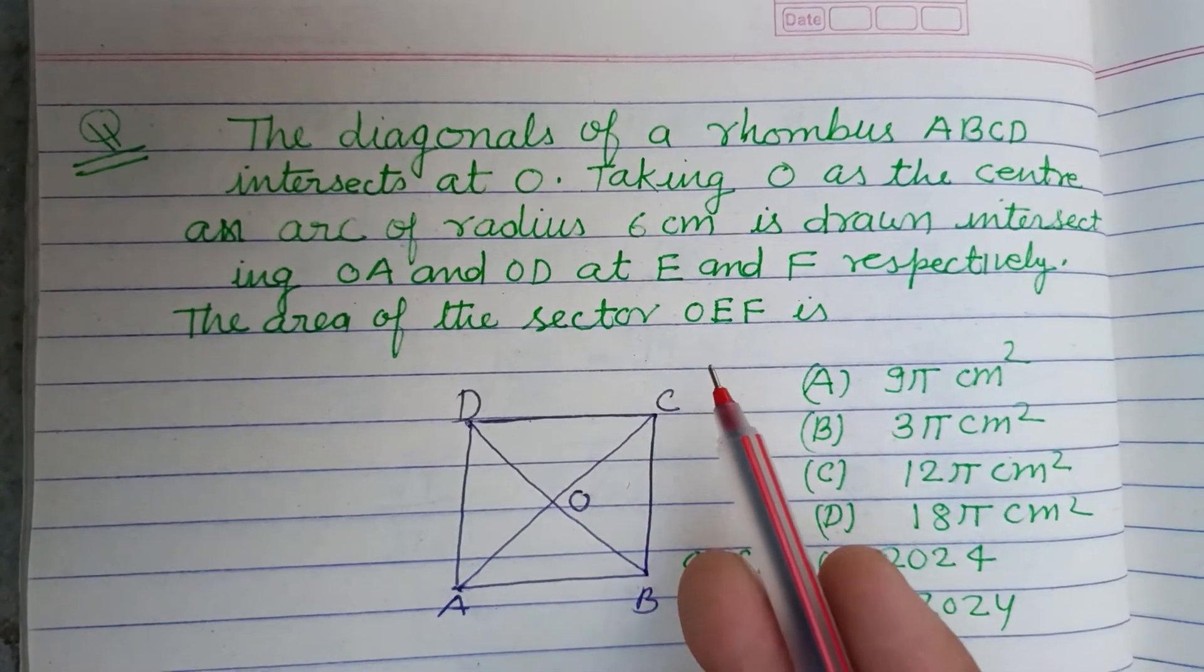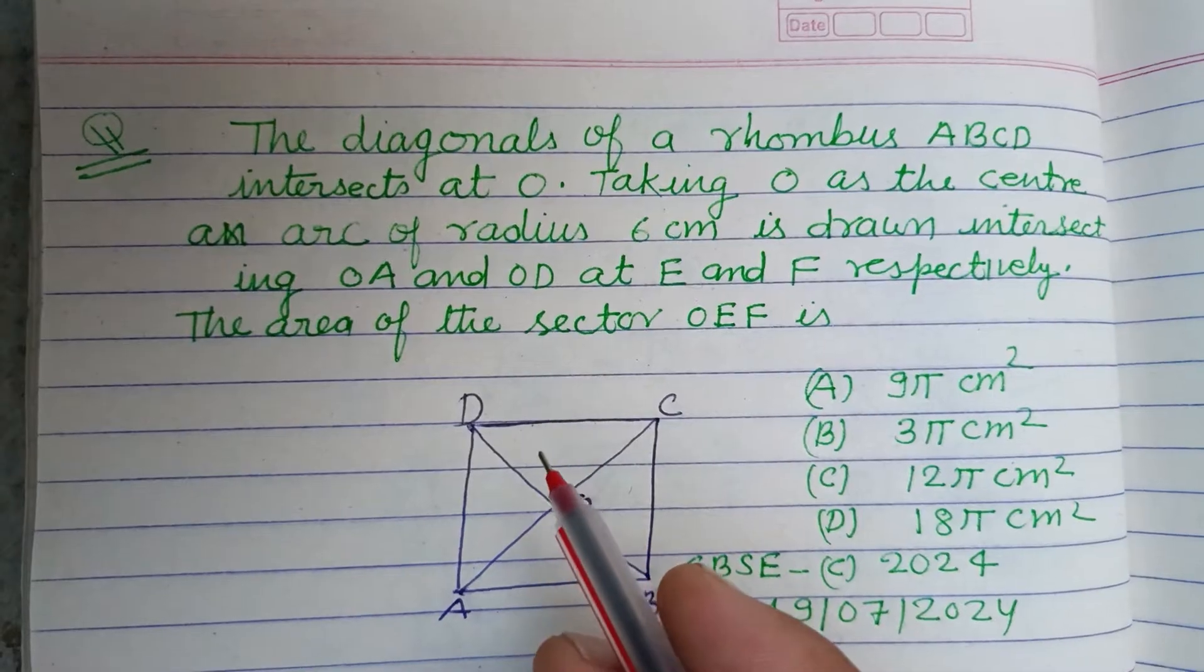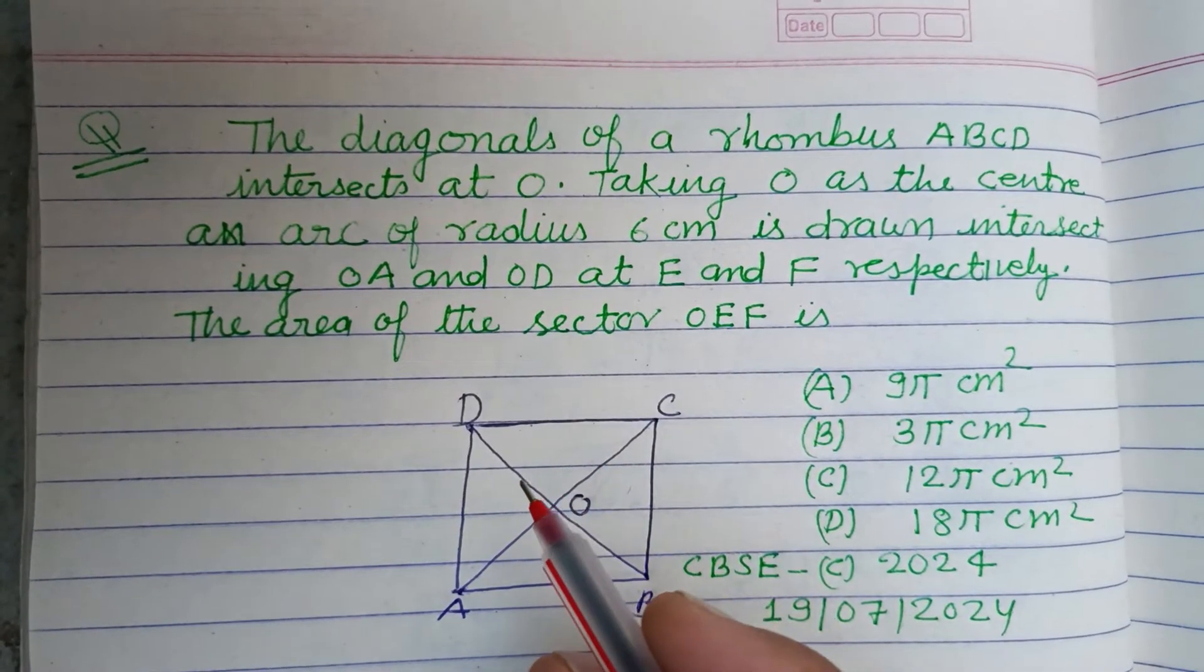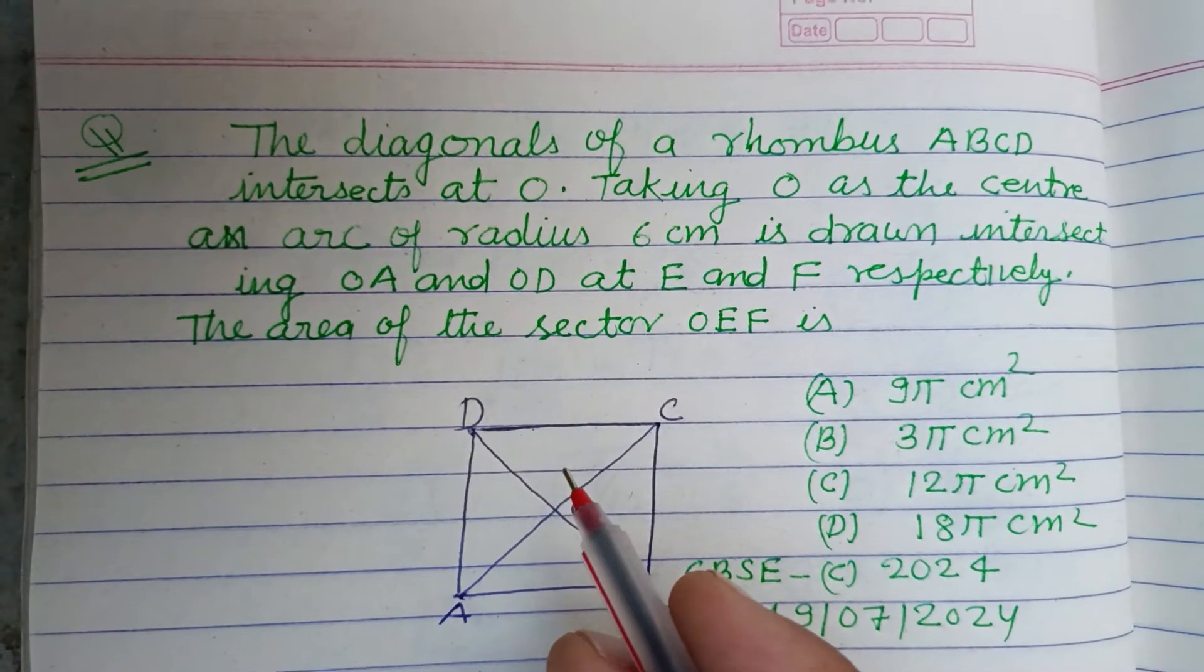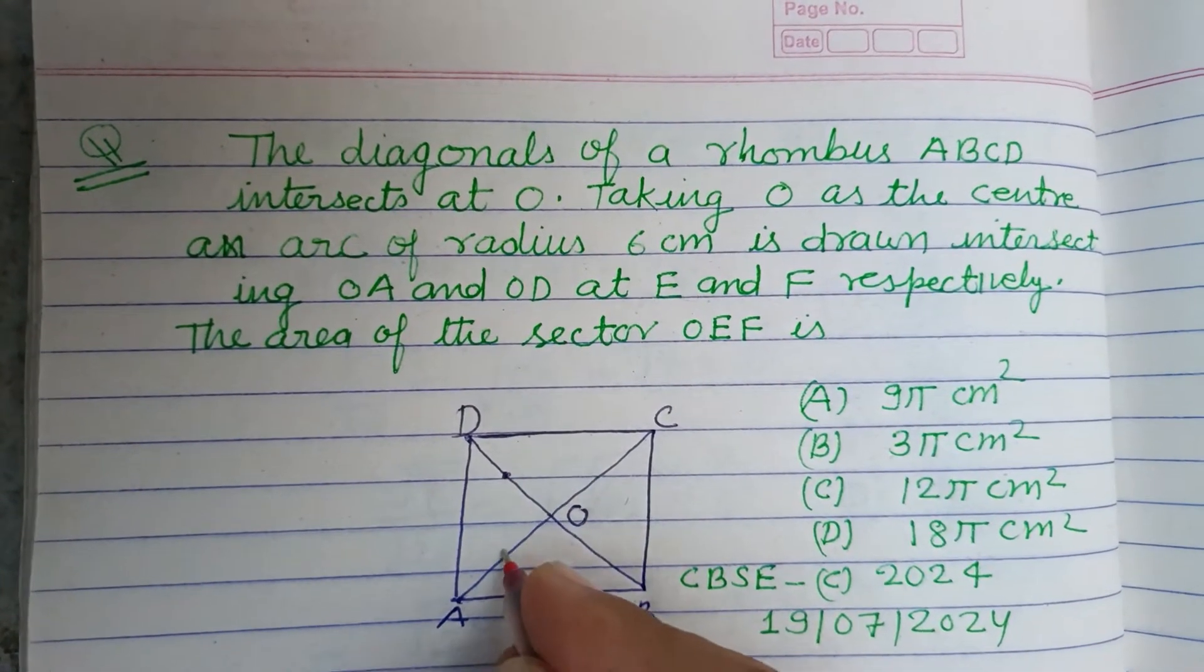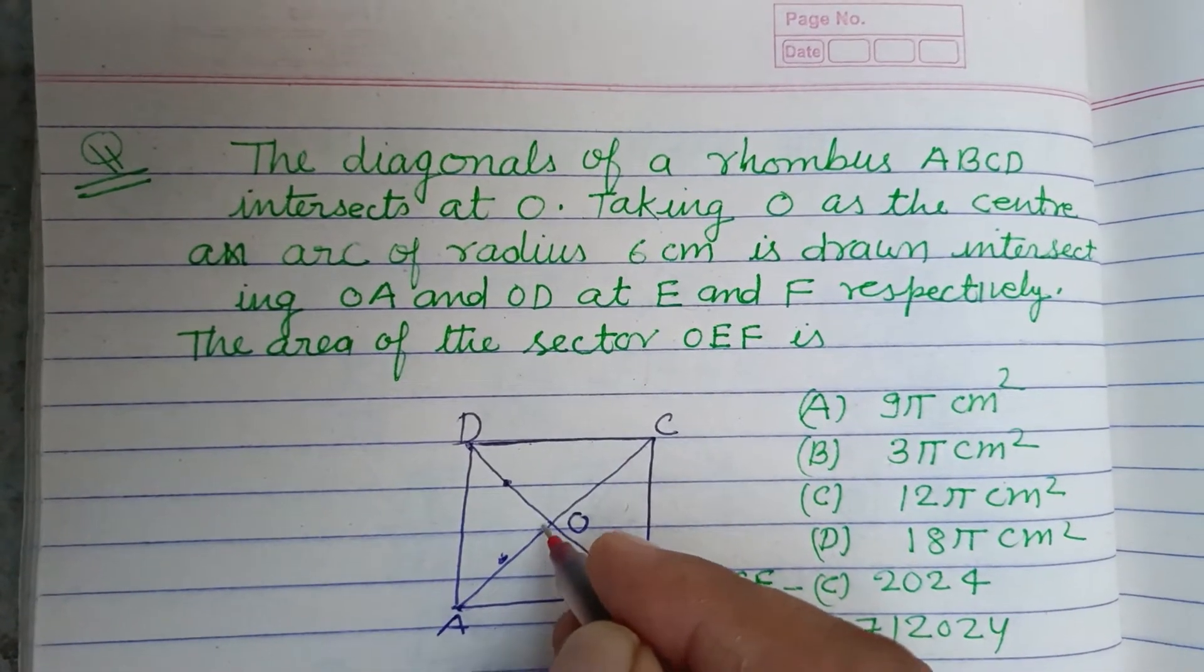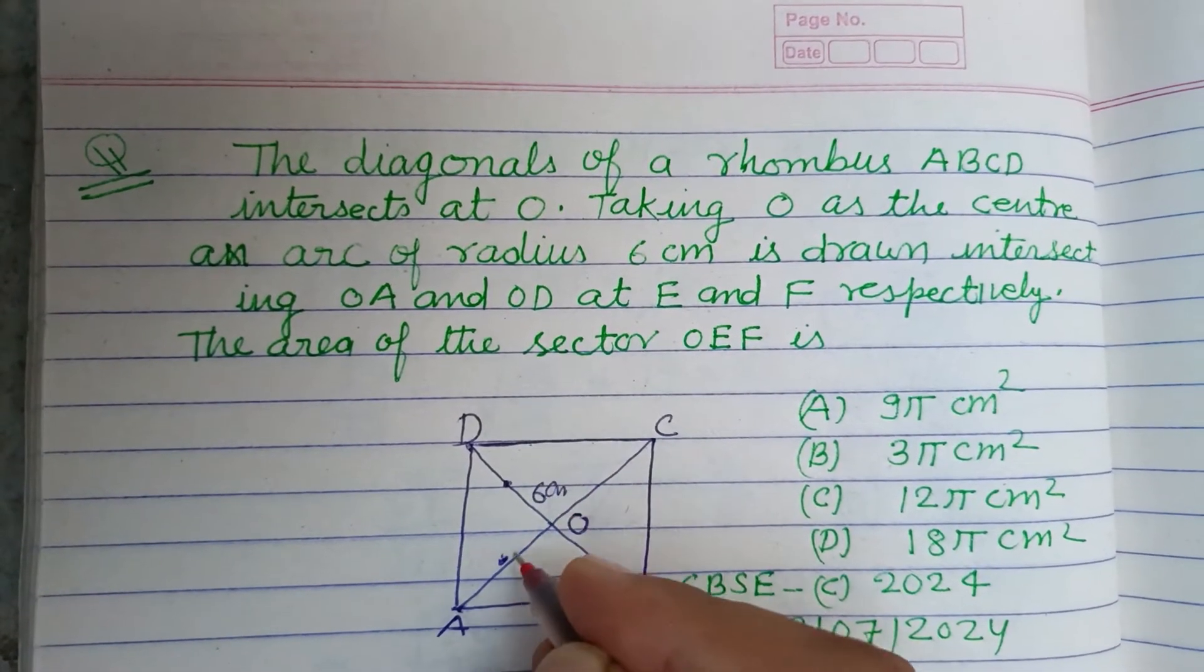Taking O as the center, an arc of radius 6 centimeter is drawn intersecting OA and OD at E and F. So the arc is drawn of 6 centimeter here.